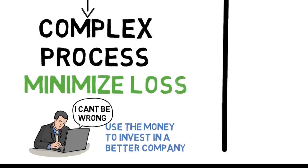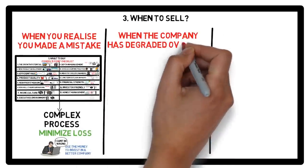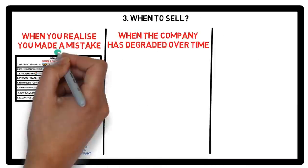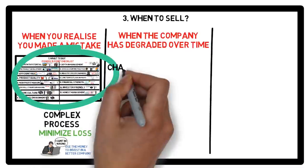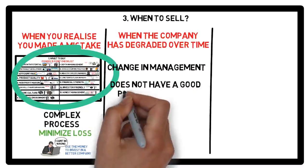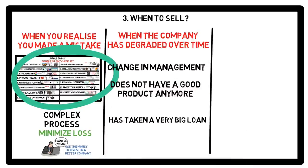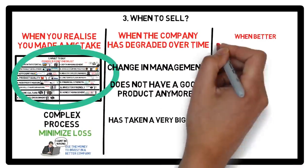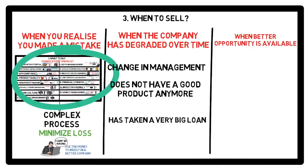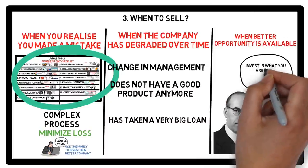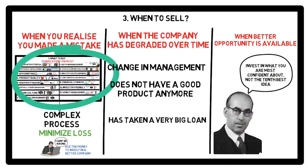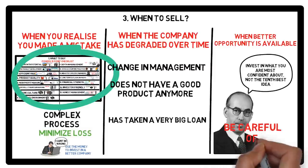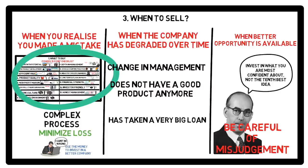The second reason an investor should sell a stock is when the company degrades over time and fails to meet the 15 reasons for which it was bought. A potential company can degrade as management changes over time or the industry as a whole suffers. The third reason an investor should sell a stock is when he finds a better investment opportunity. Switching to better stocks is the best decision even with the hassle that comes with it. Before making such investment switches, an investor must extensively analyze the situation and minimize risk related to misjudgment.